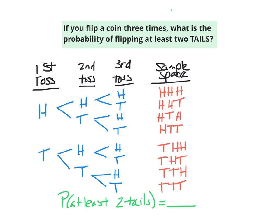In this video I'm going to go over how to use tree diagrams and organized lists to calculate probabilities. In this first set of examples I'm going to use flipping a coin three times, and these are the outcomes of flipping a coin three times.